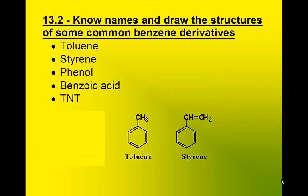Toluene, styrene, phenol, benzoic acid, and TNT all have a benzene ring in their structure.